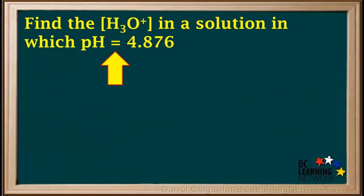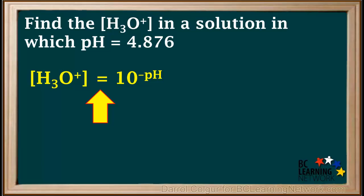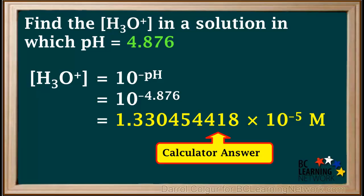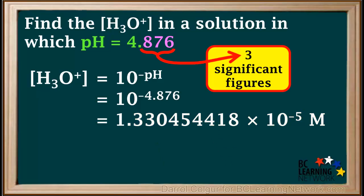Let's do an example. We're asked to find the concentration of hydronium in a solution in which the pH is equal to 4.876. We start with the formula: hydronium ion concentration is 10 to the negative pH. We substitute 4.876 in for pH — remember, the exponent is the negative of the pH value. Our calculator gives us an answer with too many significant figures, so how do we round this off? The pH value of 4.876 has three significant figures.